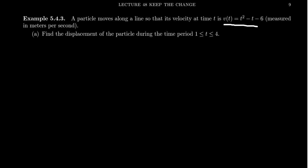Let's look at an example of a motion problem that's going to require us to use integrals and try to calculate the displacement or net change of position associated with a particle moving with the following velocity function: v(t) = t² - t - 6, measured in meters per second.